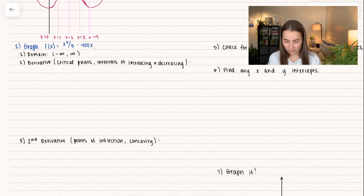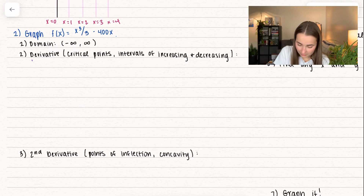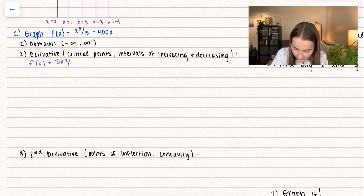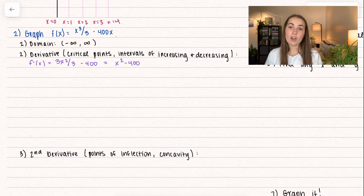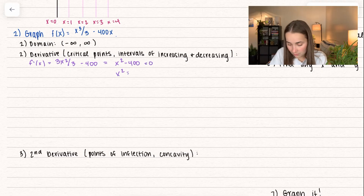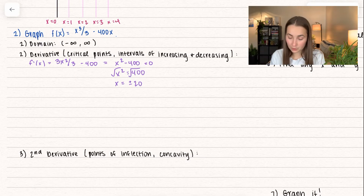Our next step is to find the derivative to find critical points and intervals of increasing and decreasing — applying the first derivative test. So f prime of x equals 3x squared divided by 3 minus 400, which simplifies to x squared minus 400. Setting this equal to zero and solving: x squared equals 400, so taking the square root of both sides gives x equals positive and negative 20. Those are our critical values.